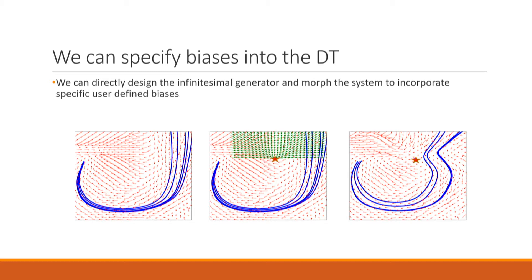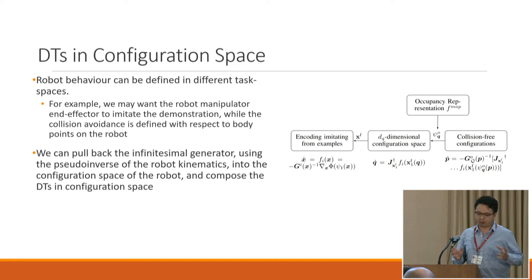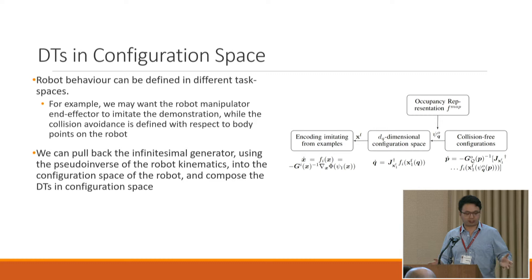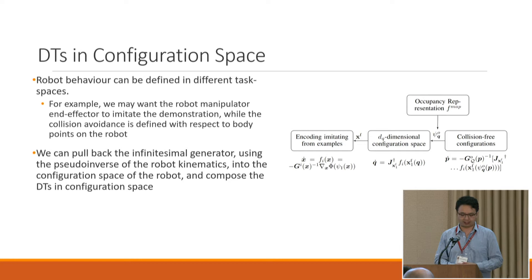A robot behavior can be defined in different task bases. For a robot manipulator, we might want the end effector to imitate some demonstrations while collision avoidance is defined on body points on the robot. We can pull back the infinitesimal generator using the pseudo-inverse of the robot kinematics into the C-space of the robot, and then compose the diffeomorphic templates in C-space.